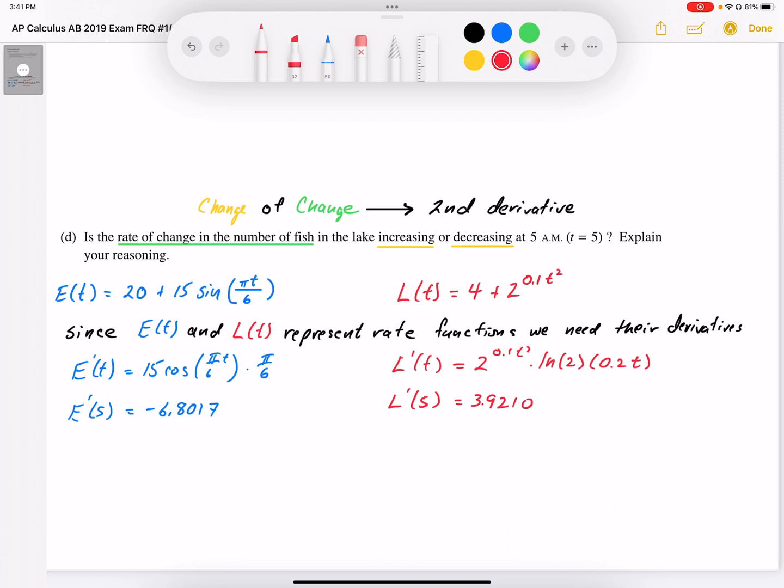Now, what we need to then compare is the overall rate. It's going to be the entering, so E' at 5,